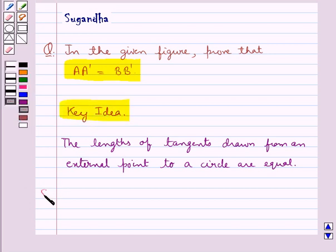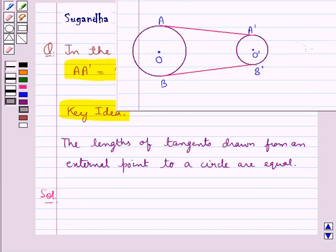Let's move on to the solution now. This is the figure given to us and we have to show that AA dash is equal to BB dash.